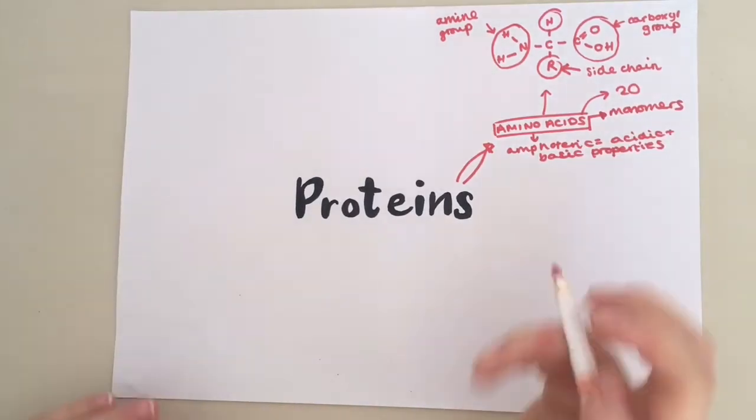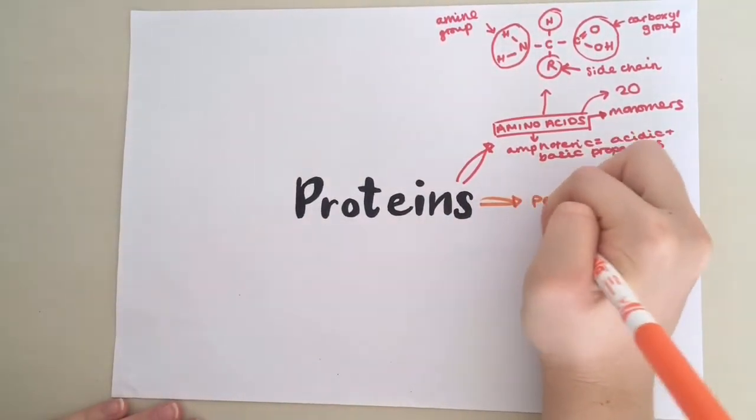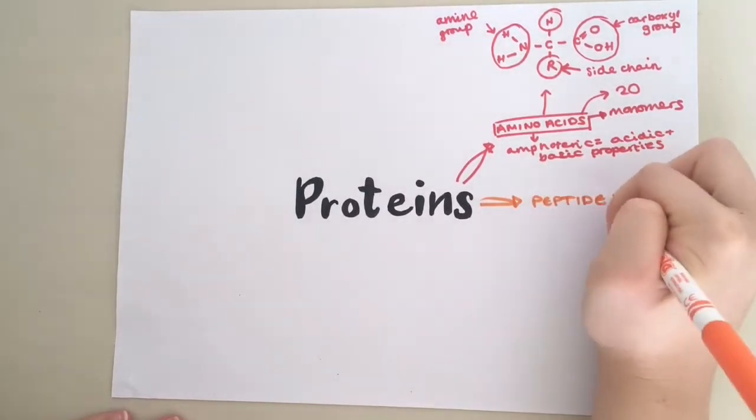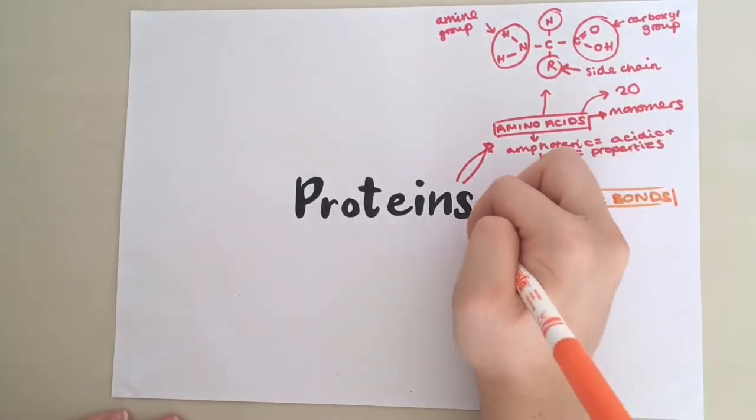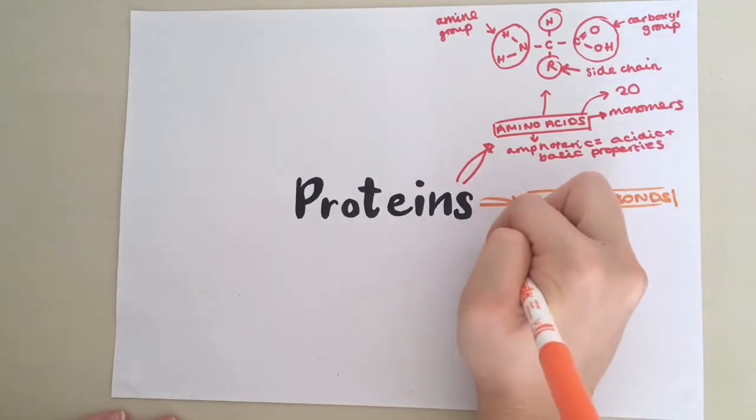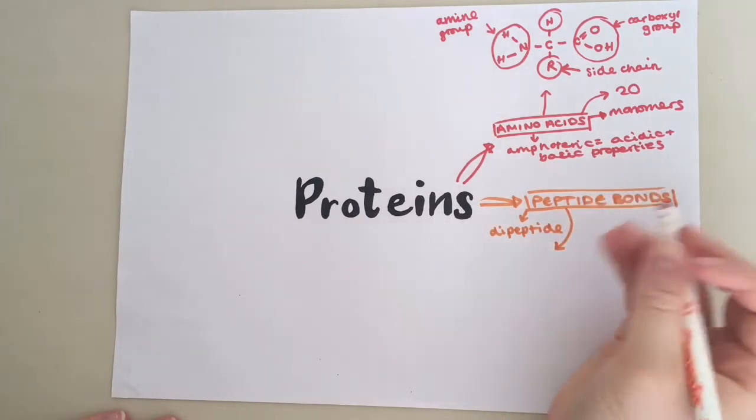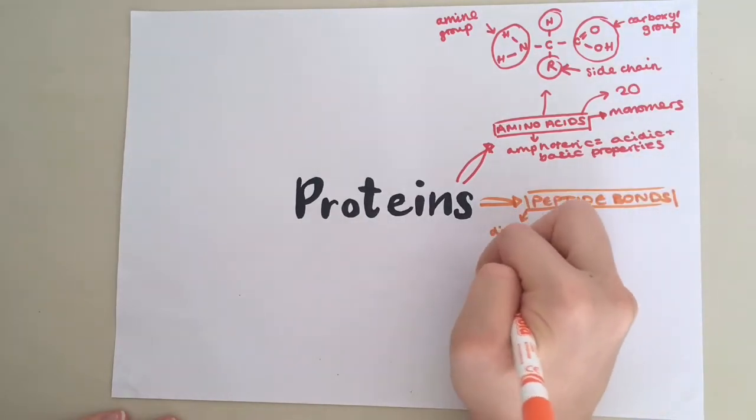When two or more amino acids join together, they will form a special type of bond known as a peptide bond. When you have two amino acids joining together, you get a di-peptide. And when you have more than two amino acids joining together, you get a poly-peptide.